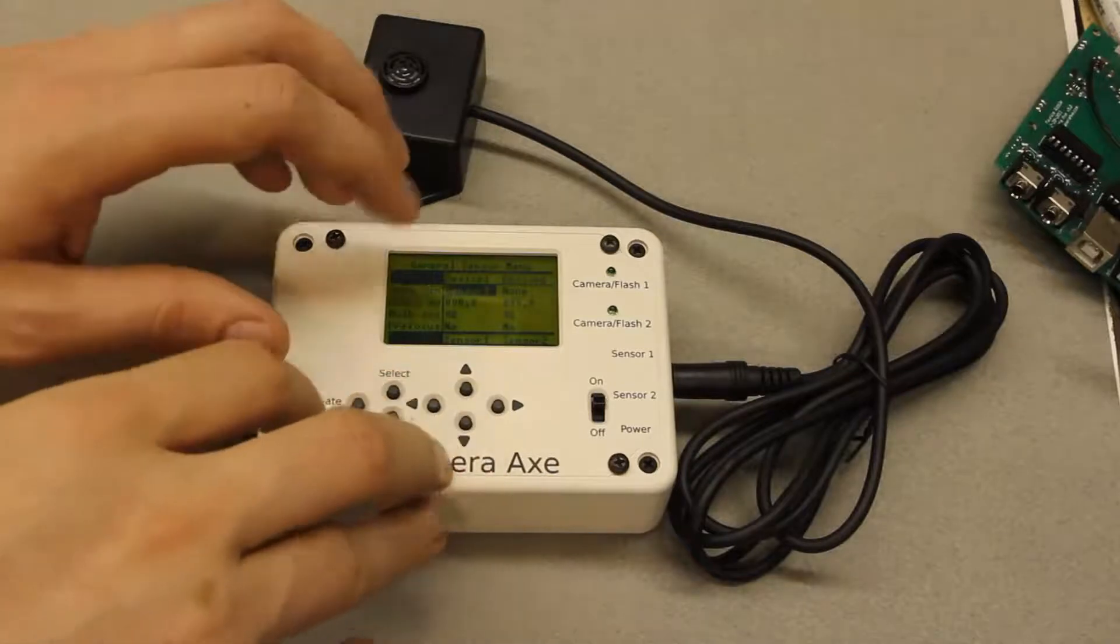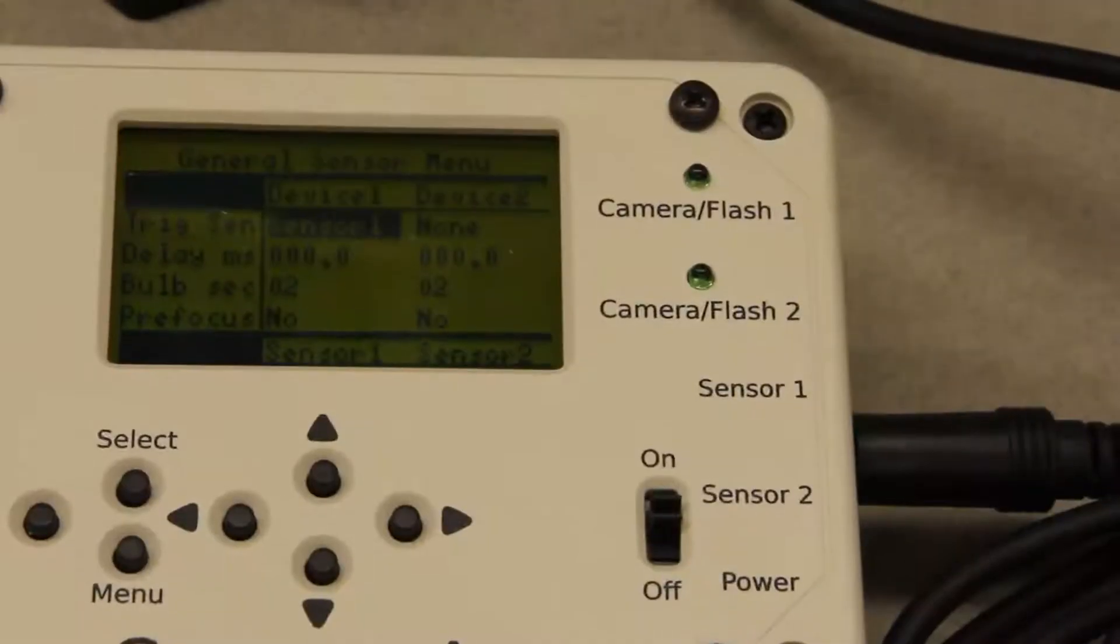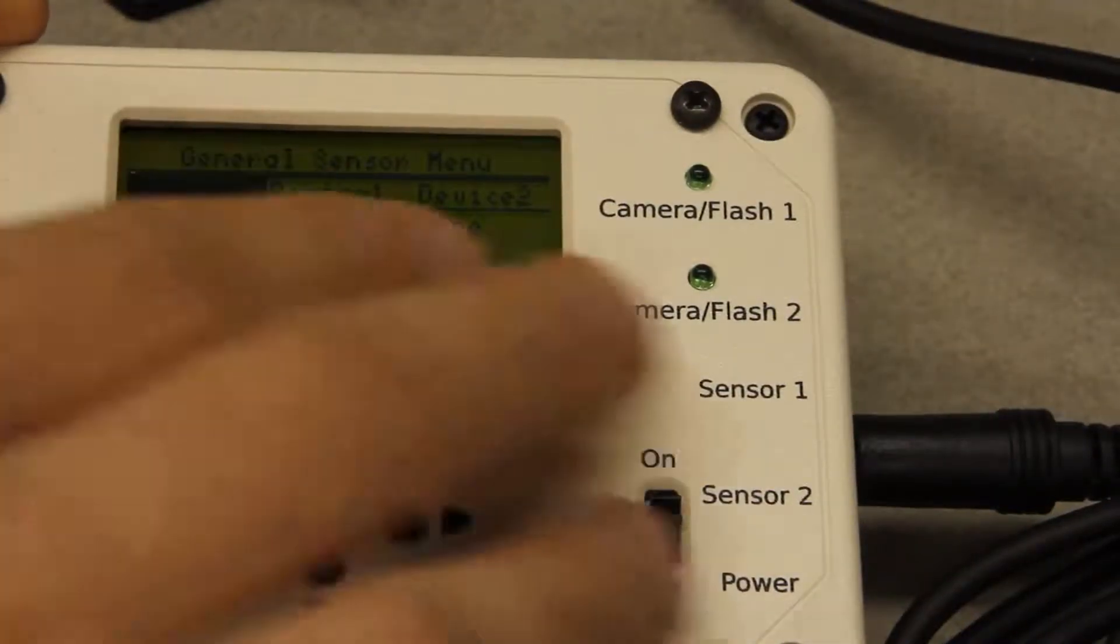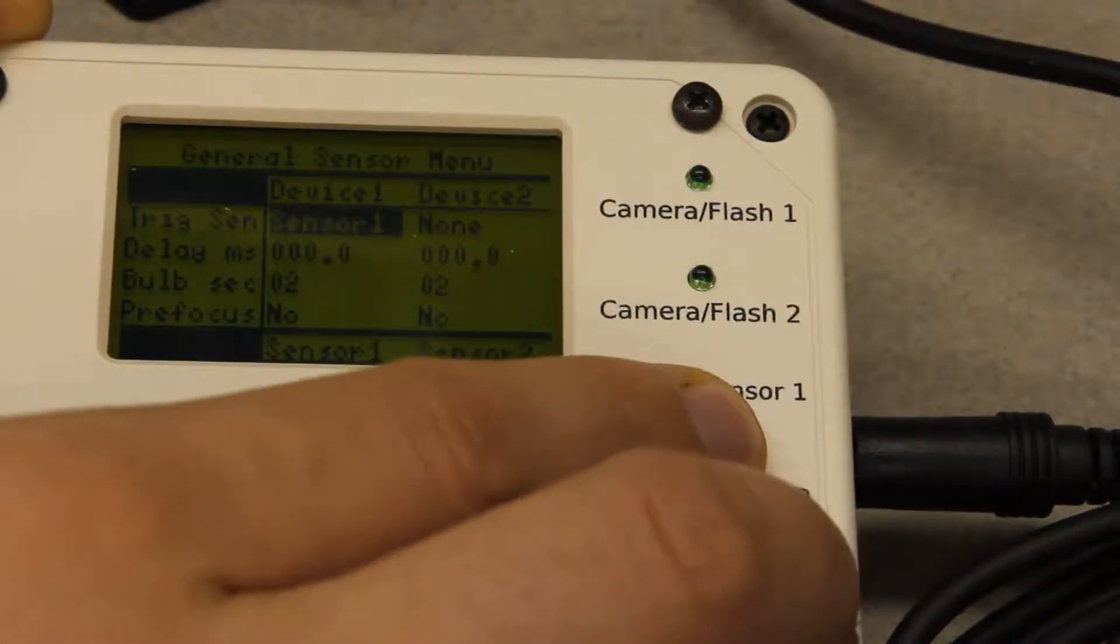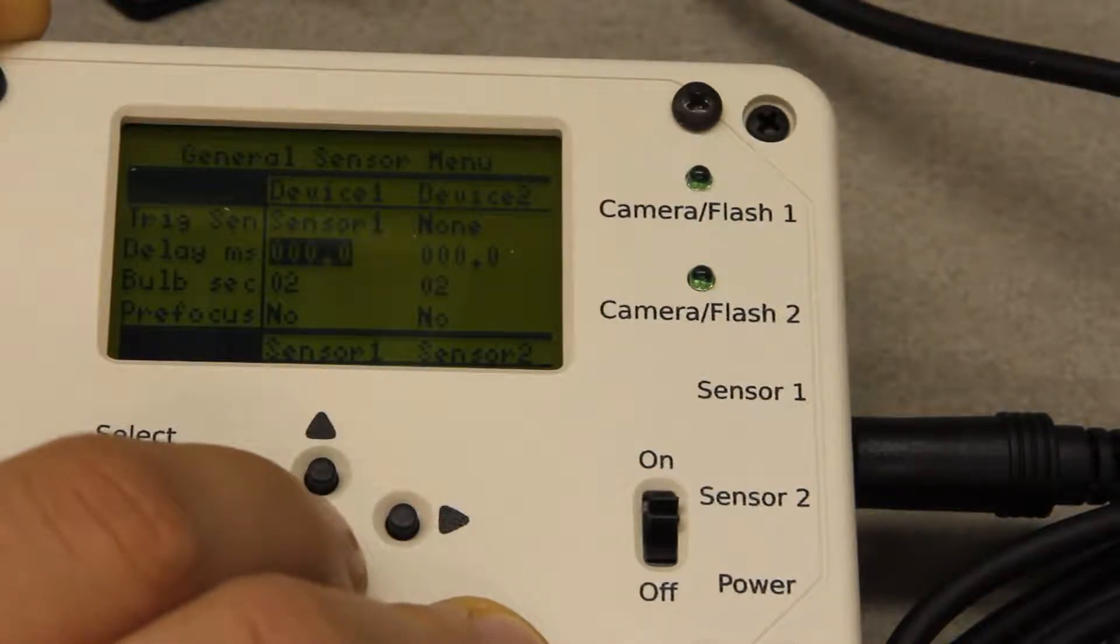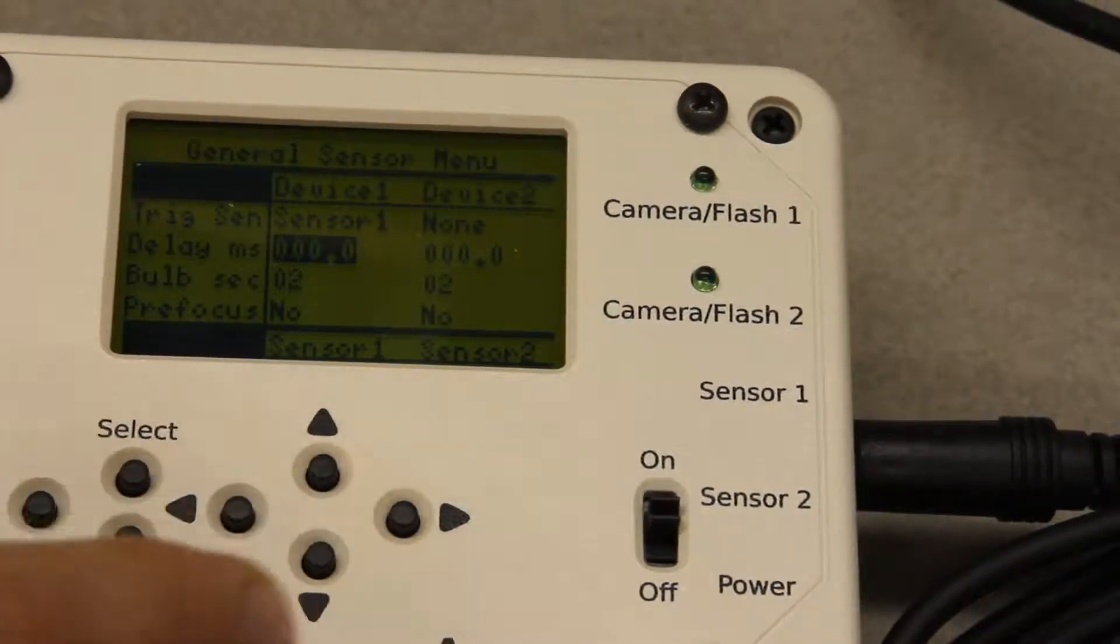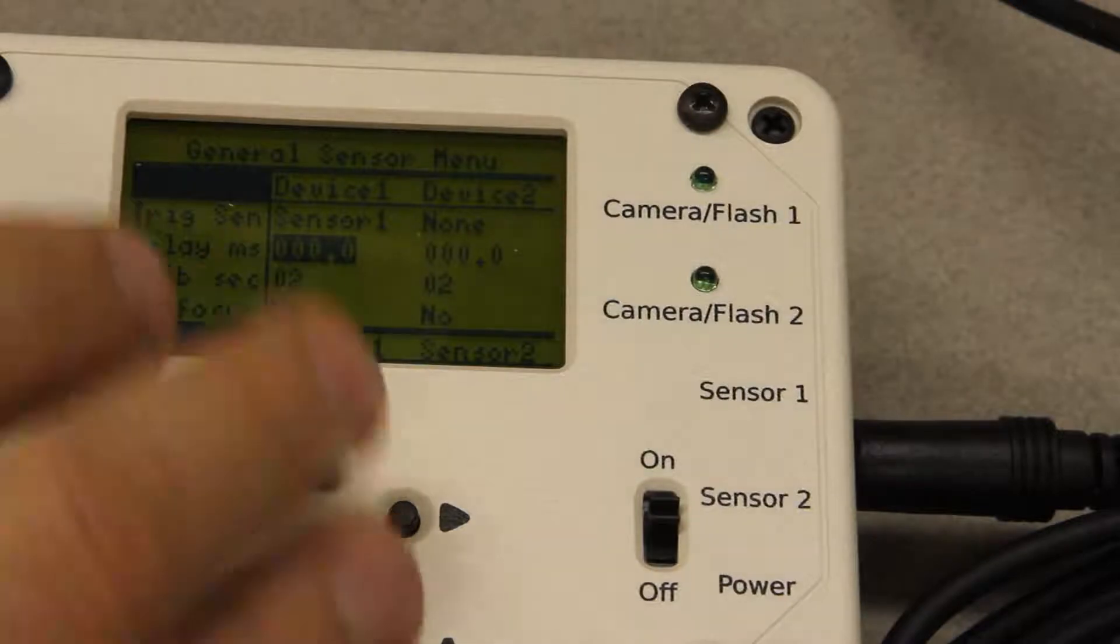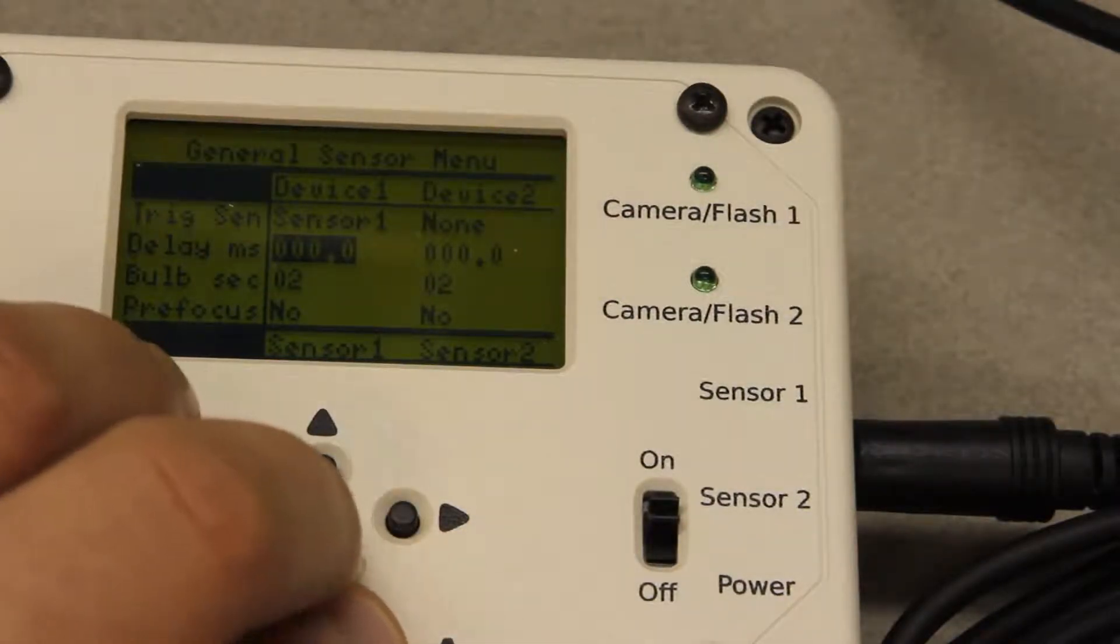So that's this first line, this trigger sensor line is basically just saying that device number one, which is your camera, is going to get triggered by the motion sensor which is plugged into sensor number one. The delay for this type of sensor is usually going to be zero. But if you wanted to have a delay between when the sensor detects something and when you take a photo, you could add a value in here to make that delay happen.